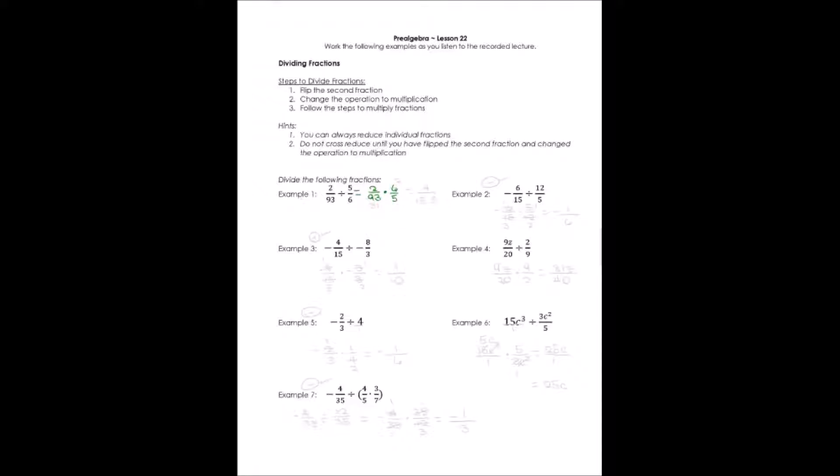Now, let's see if anything can be reduced. I'm talking cross-reducing is probably our best bet here. I don't see anything that can individually be reduced. 2 and 5 won't work. 2 and 93 won't work. But 93 and 6 have a common factor, and it's the factor 3.